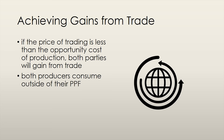Liz gains from trade because she can buy t-shirts from Joe at a lower cost than her own opportunity cost of production. Joe gains from trade because he can buy socks from Liz at a lower cost than his own opportunity cost of production. In essence, if they trade, they can consume outside of their production possibilities frontiers — though keep in mind that they do not, by any means, produce outside of their production possibilities frontiers.